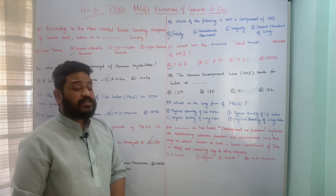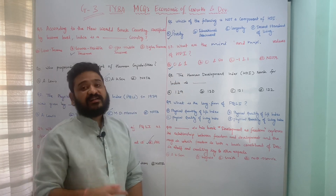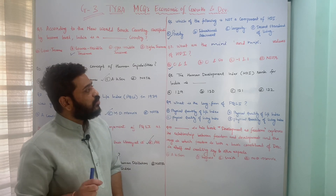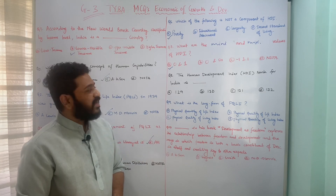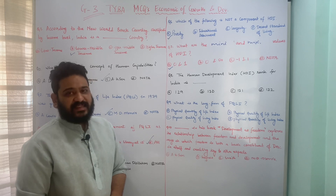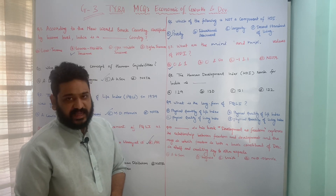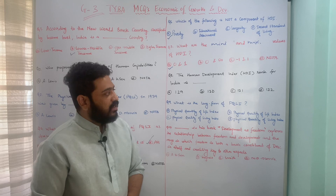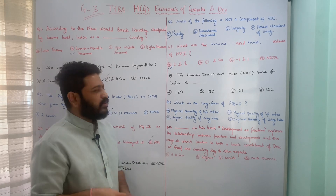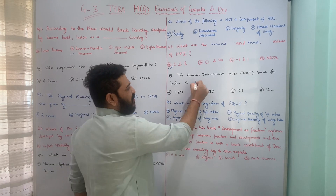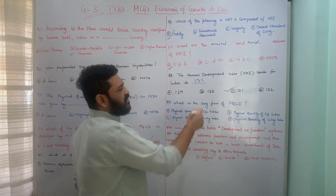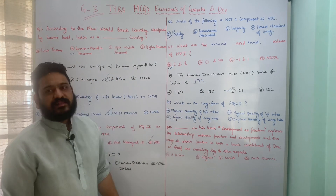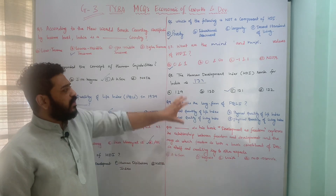The next question asks about India's current HDI rank. Options are 129, 130, 131, or 132. This is a factual question you have to remember. The answer is 131 — option C is the correct answer. The HDI rank for India is 131. I hope this is clear.